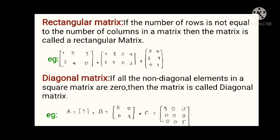Coming to the diagonal matrix, if all the non-diagonal elements in a square matrix are zero, then the matrix is called a diagonal matrix. Examples for diagonal matrix are given below.